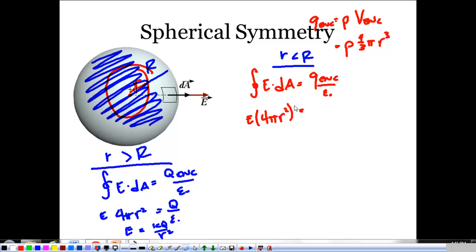4 thirds pi little r cubed. So, my electric field is going to be that Q enclosed rho, which is Q over 4 thirds pi big r cubed times my volume enclosed, 4 thirds pi little r cubed. That's the case, 4 thirds pi goes away, little r squared and two of those go away. My electric field is Q times R over 4 pi times big R cubed times epsilon naught. I left that off, okay, there's an epsilon naught in here.